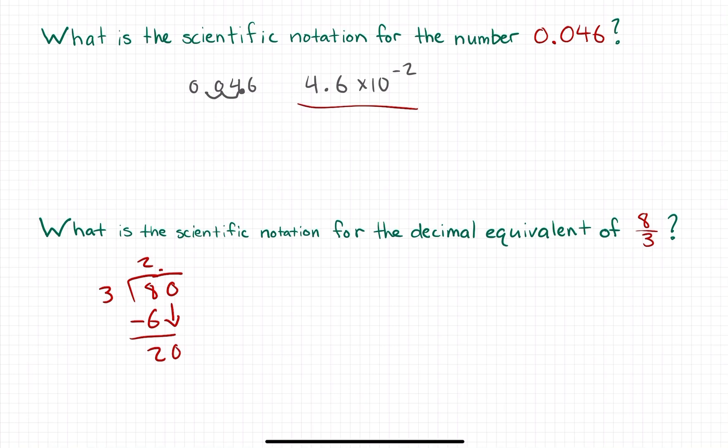3 goes into 20 six times. 3 times 6 should give me 18, and that's gonna give me an infinite loop of fitting 3 into 20 and getting 6 on top. So you'll see here that the decimal equivalent of 8 over 3 is actually 2.6 repeating.